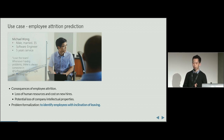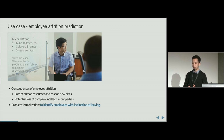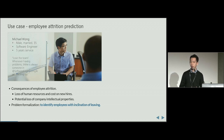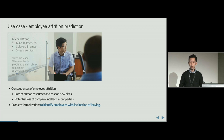So one of the very interesting use cases is about employee attrition prediction. This is actually very common in companies because companies really care about whether some employees are not satisfied with their current situation, and they may have feelings about leaving the company. So maybe we can use some factors to predict whether employees will leave.